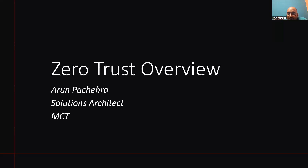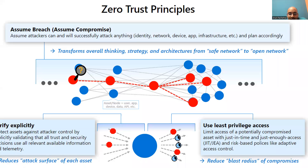That's why Zero Trust comes into the picture. Let's go through some guiding principles of Zero Trust. This diagram, borrowed from Microsoft, shows three guiding principles of Zero Trust: verify explicitly, least privilege principle, and assume breach. These are the three principles that will guide us to secure our environment with the Zero Trust approach.